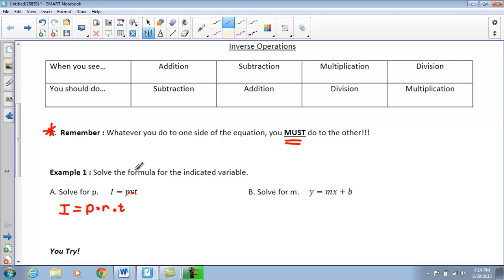So, what I'm going to do first is I'm going to figure out what variable I'm solving for. So, it wants me to solve for P. So, eventually, I want P all by itself. So, in between each of these variables, I see multiplication. So, to get rid of those, I am going to divide both sides by R and T.